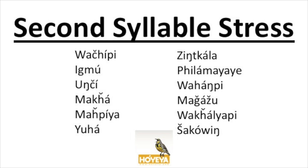Here are our list of second syllable stress words: wachipi, igmu, unchi, makha, makhpia, yuha, zintkala, pilamayaye, wahampi, maghazhu, wakalyapi, shakomi.